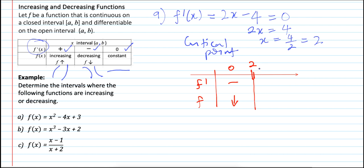Next, choose a number greater than 2, for example 5. Substitute x into f prime: 2 times 5 is 10, and 10 minus 4 equals positive 6. We only need the sign, which is positive, so f is increasing on (2, ∞).